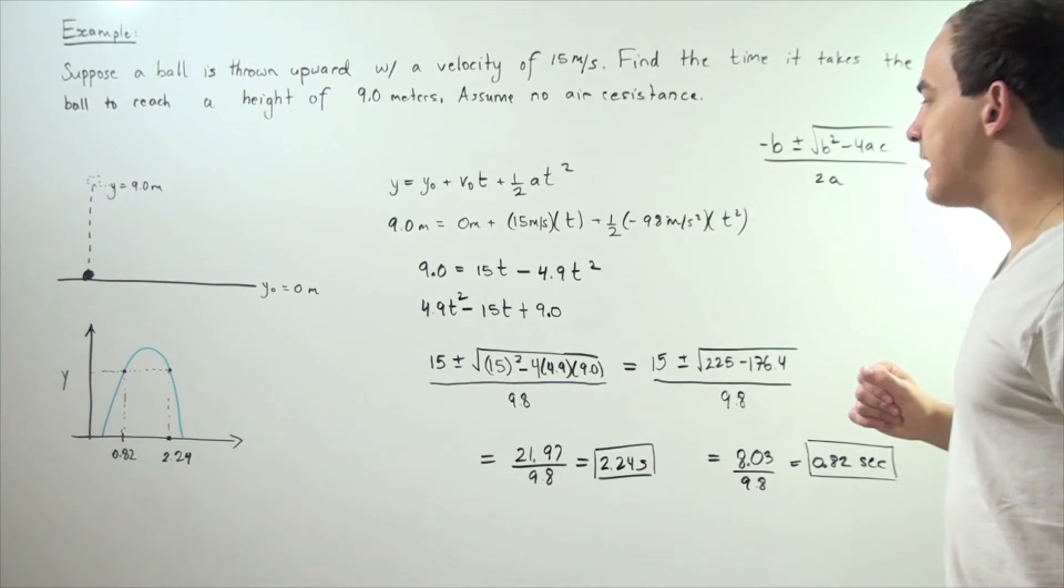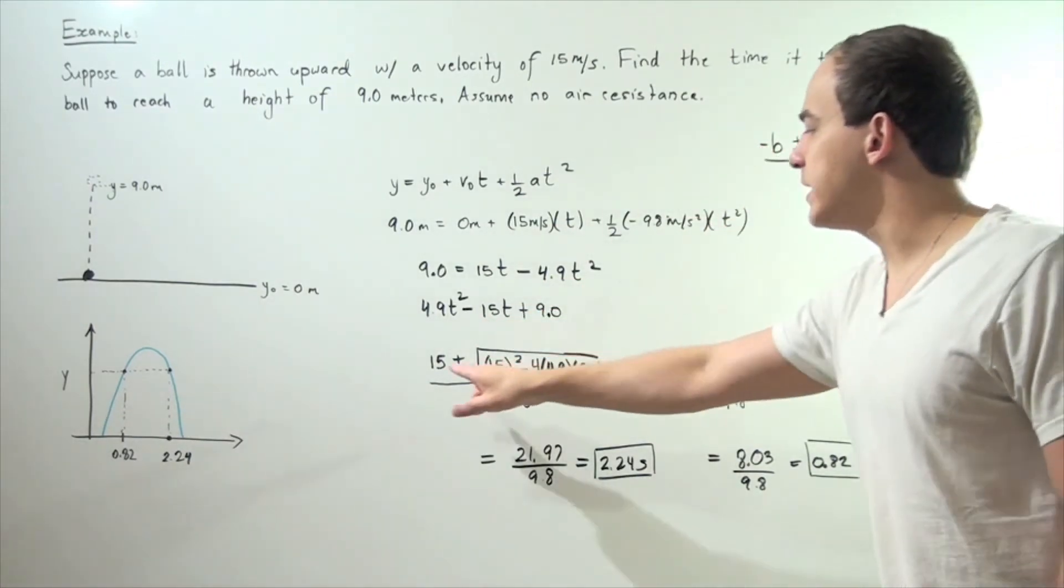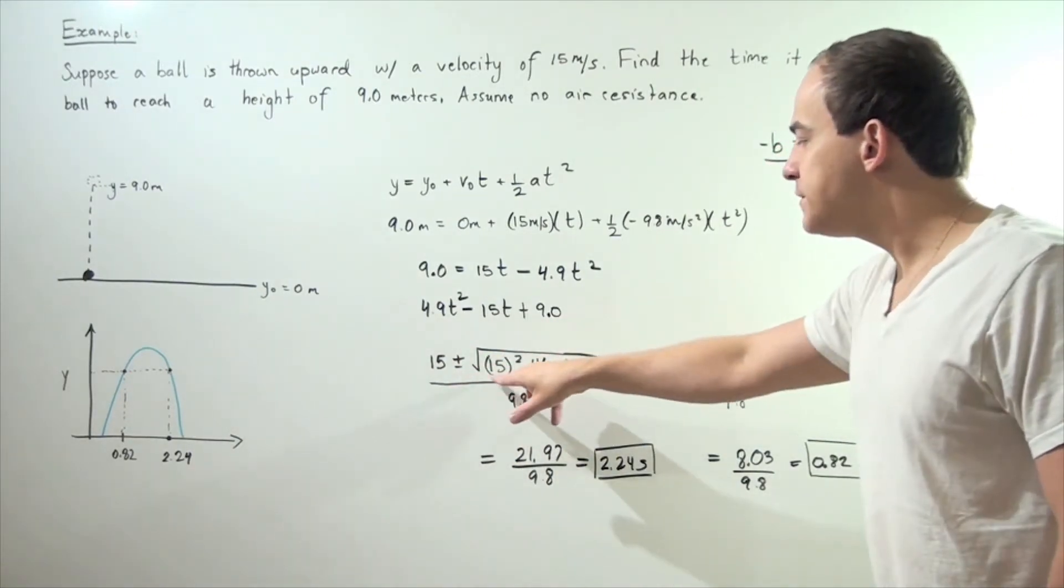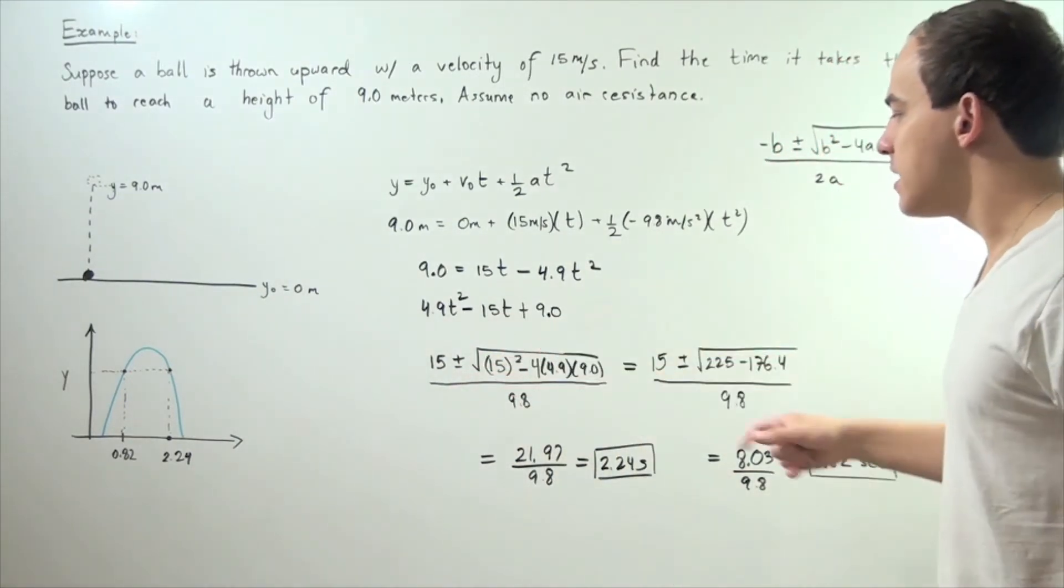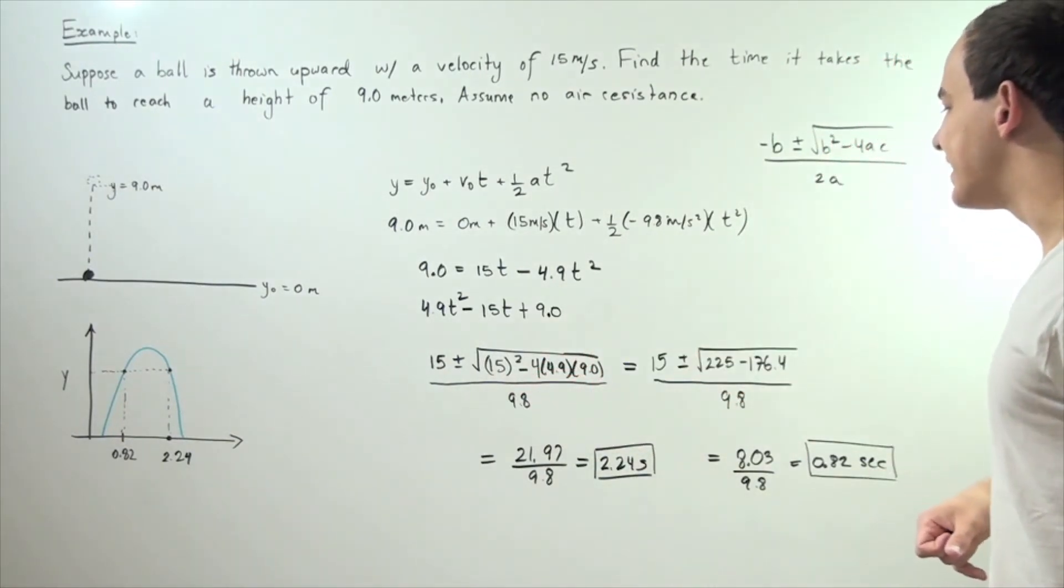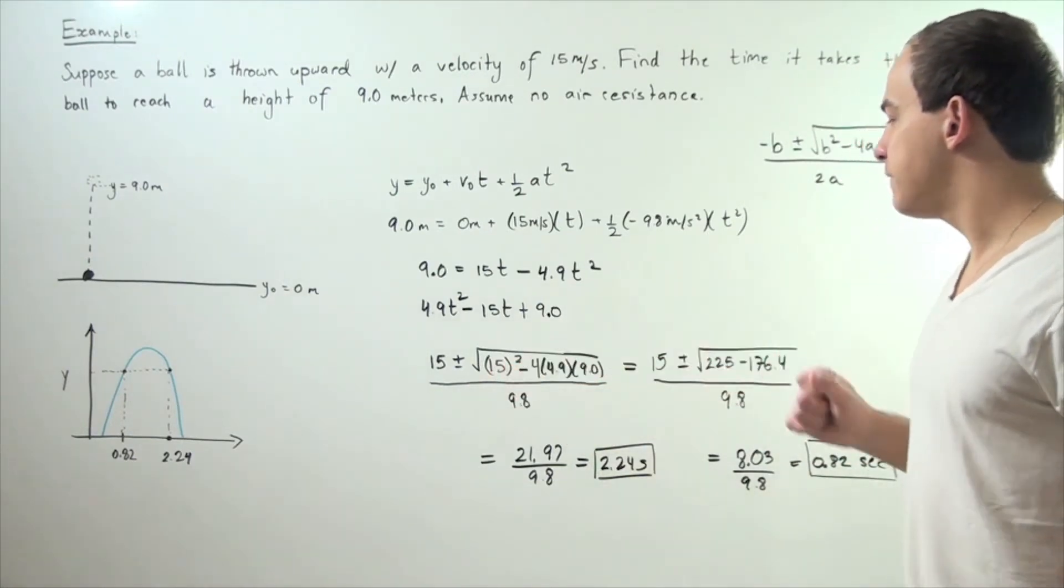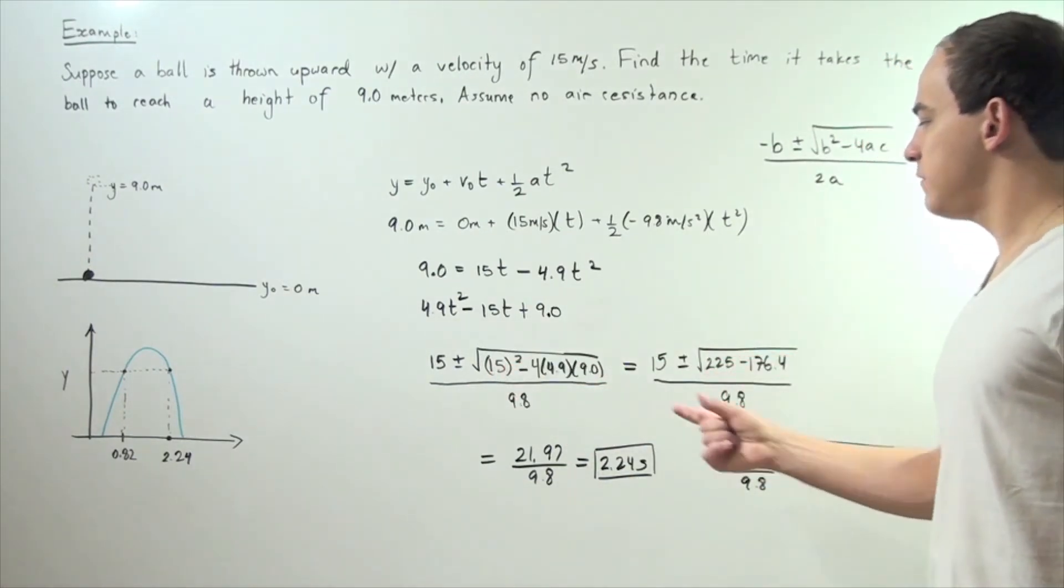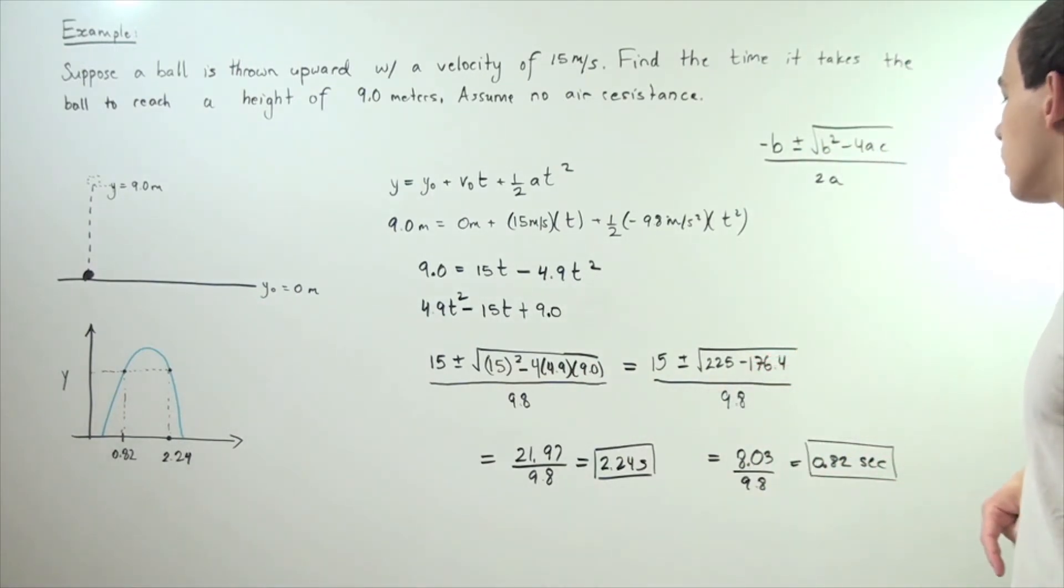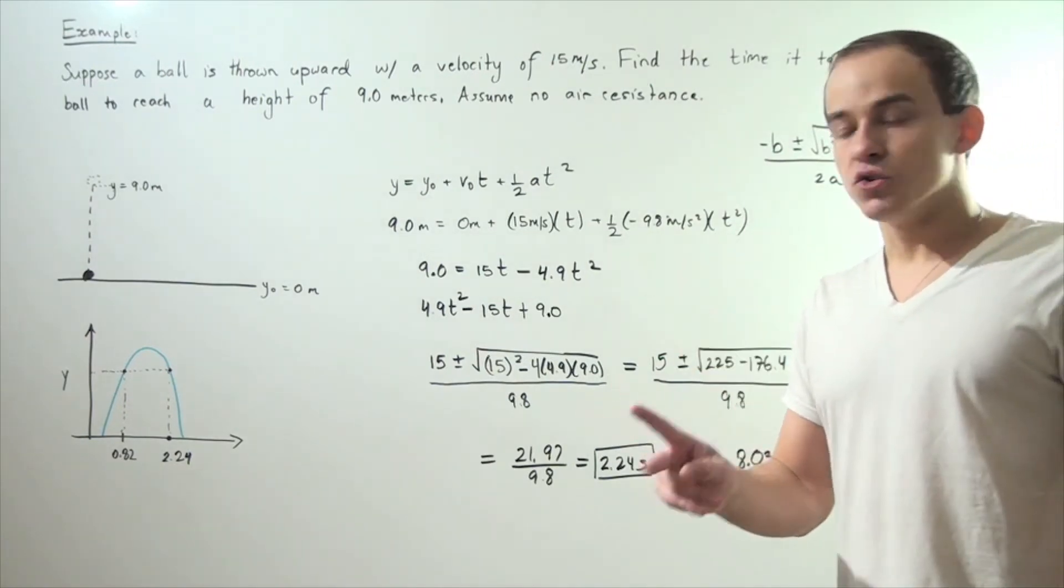Let's plug all the values in. We get negative 15 times negative, so we get positive, plus minus radical, negative 15 squared minus 4 times 4.9 times 9. If we multiply 15 by 15, we get 225. If we multiply these numbers out, we get 176.4. Let's plug them into the calculator and at the end we get two values.